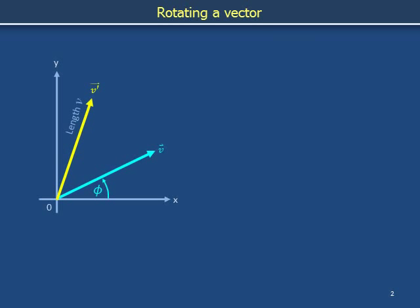The original blue vector v makes an angle phi with the x-axis. The new yellow vector v' makes an angle theta with the old vector v.